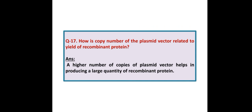How is copy number of the plasmid vector related to yield of recombinant protein? Answer: A higher number of copies of plasmid vector helps in producing a large quantity of recombinant protein.